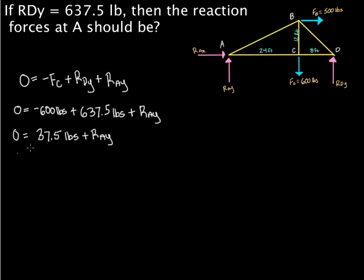And we still have the positive R_AY. To get R_AY by itself, we subtract 37.5 to both sides. And we get negative 37.5 pounds equals R_AY. So negative 37.5 pounds, it's telling us that R_AY is actually not going up, it's actually going down. So R_AY equals negative 37.5 pounds.